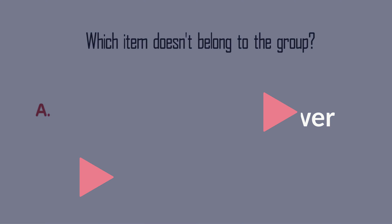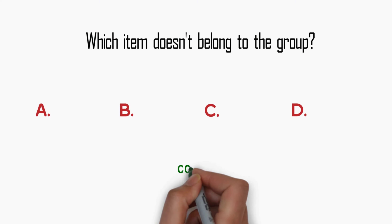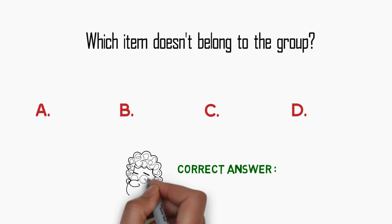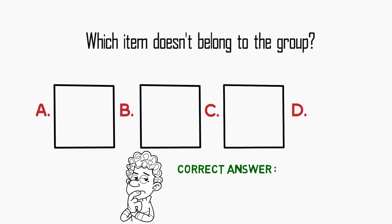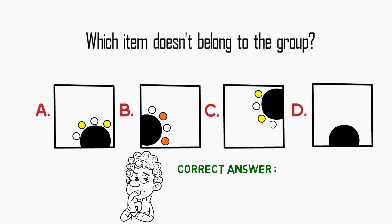There's always a pattern you need to detect to answer these types of questions correctly, and a lot of times there are items designed to confuse you. For example, you have small circles — there are four small circles in each square — but the small circles do not have any patterns. There are also triangles; some squares have two and some have one, but there is no pattern there either.